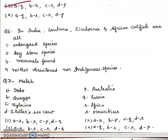Sixth question: In India, Lantana, Eichhornia and African catfish are: all endangered species, keystone species, mammals, neither threatened nor indigenous species. Right answer will be neither threatened nor indigenous species. They are all exotic species.